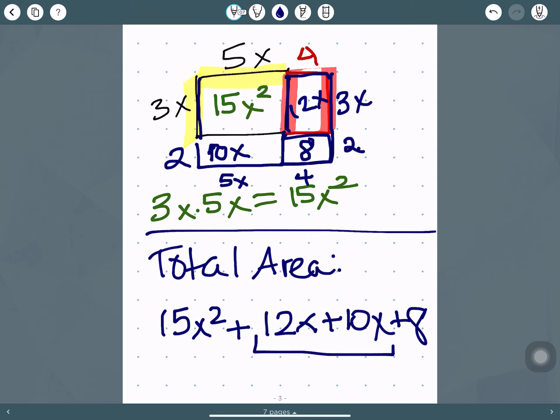You want to look for any terms that you can combine. So 12x and 10x can be combined. So you have 15x squared plus 22x plus 8, and that is your final answer.